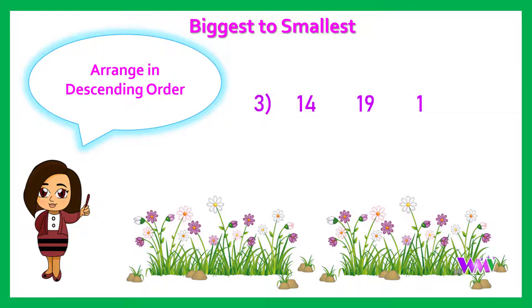Next question: 14, 19, 1. The descending order is 19, 14, 1.